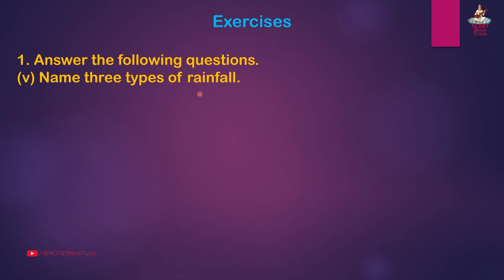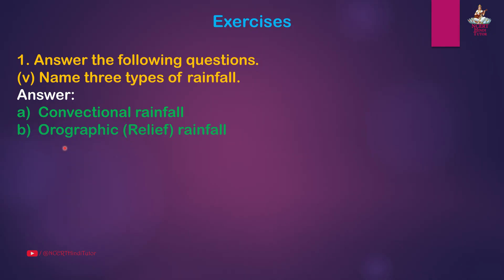Fifth, name three types of rainfall. Answer: a. Convectional rainfall, b. Orographic (relief) rainfall, c. Cyclonic rainfall.